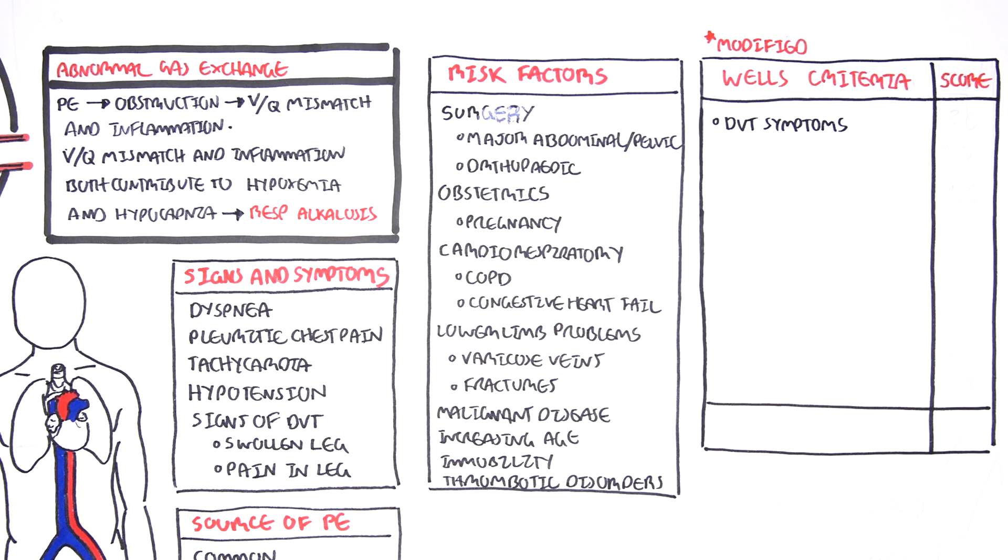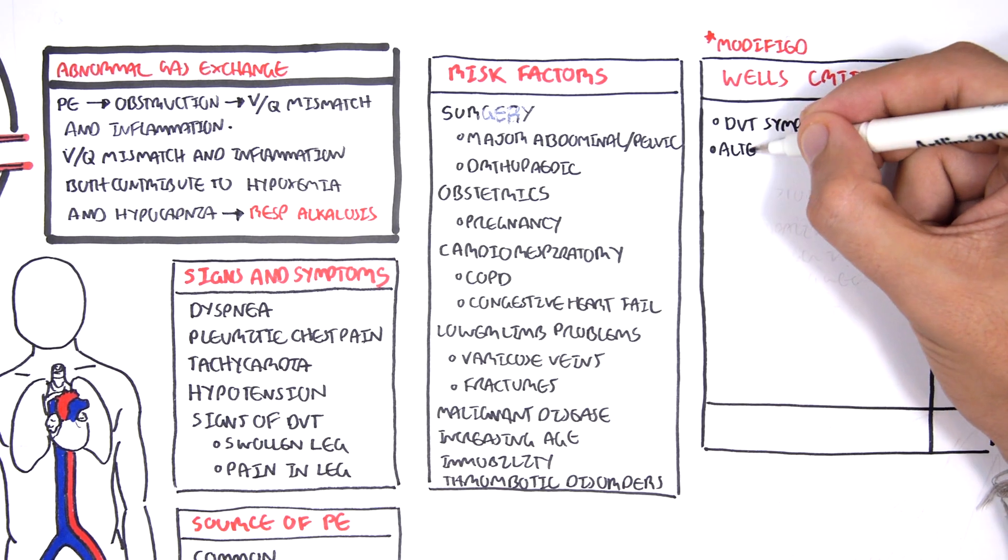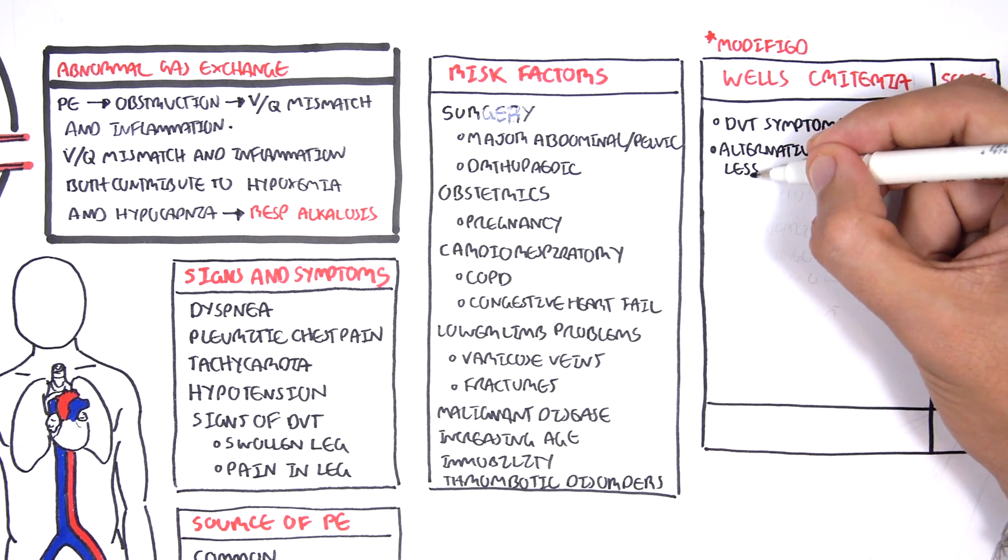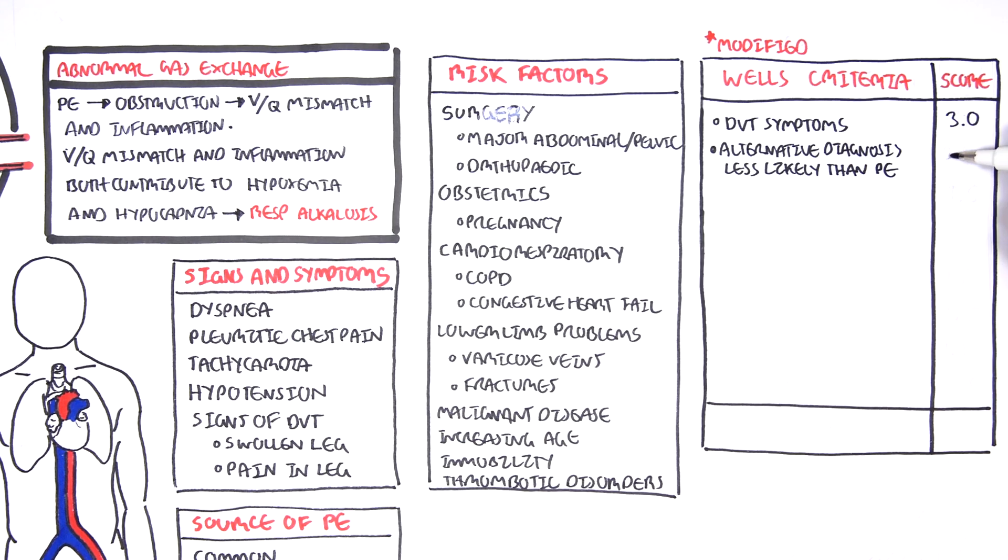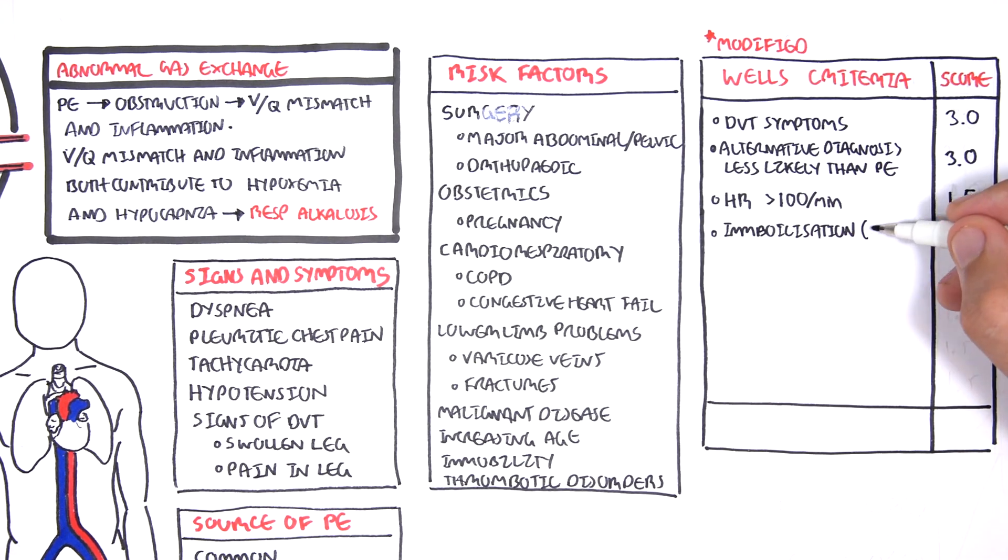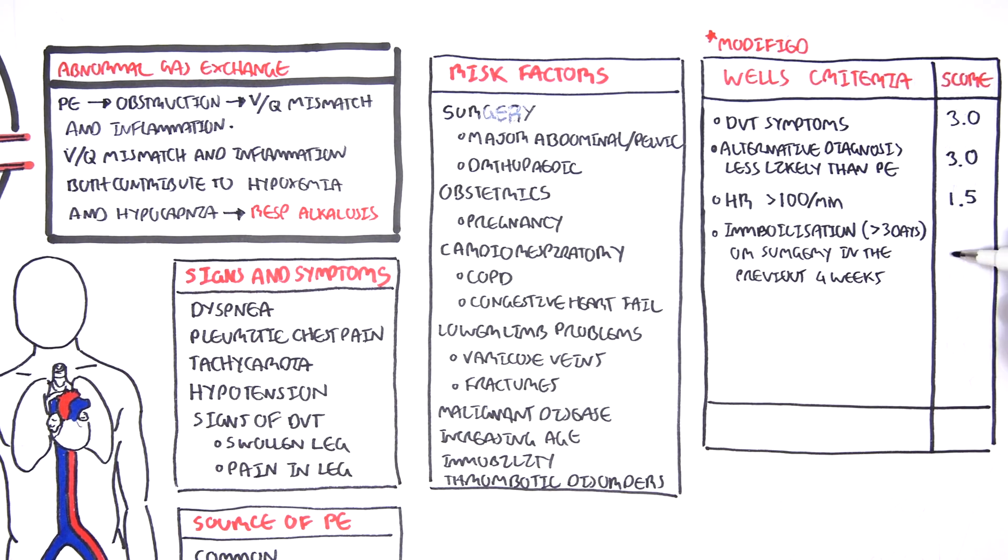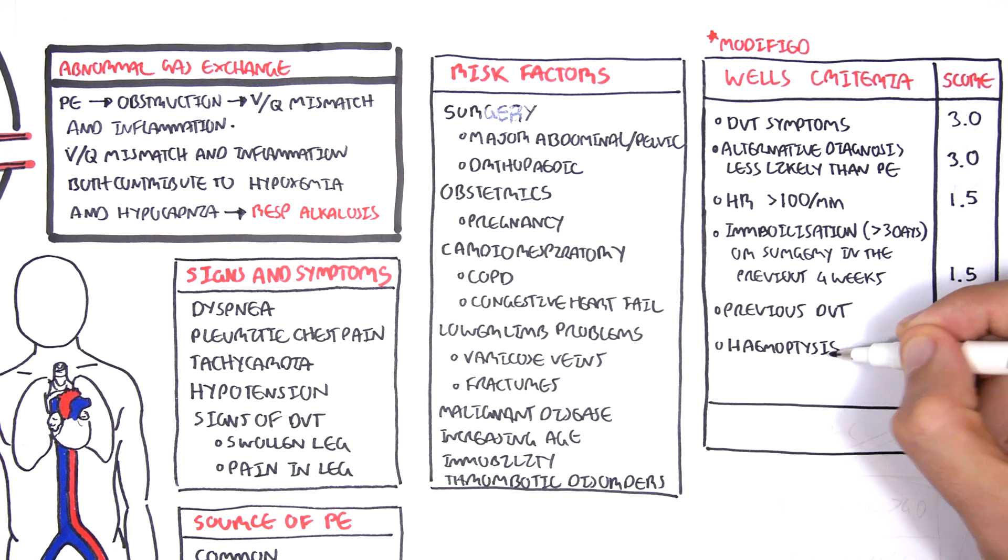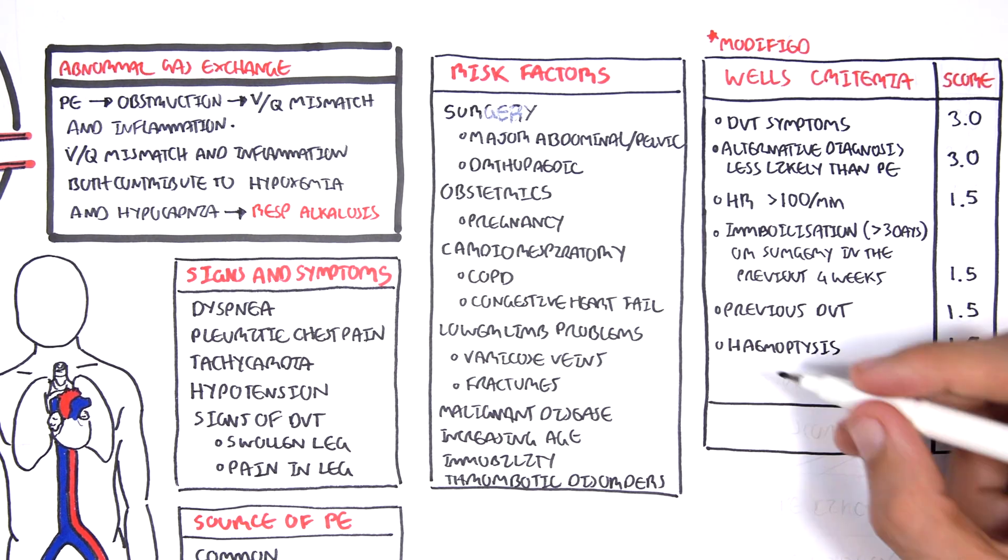These factors include DVT-like symptoms, which will give you a score of 3. Alternative diagnosis less likely than PE will give you a score of 3. Heart rate greater than 100 will give you 1.5. Immobilization more than 3 days or surgery in the previous 4 weeks will give you 1.5. Previous DVT 1.5, hemoptysis 1, malignancies 1.